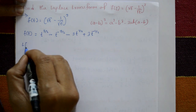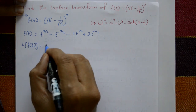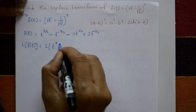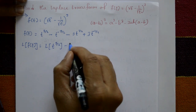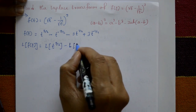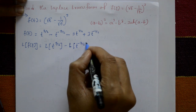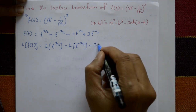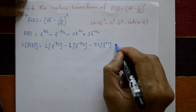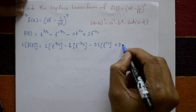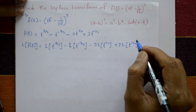Now applying the Laplace transform to both sides: L{f(t)} = L{t^(3/2)} - L{t^(-3/2)} - 3·L{t^(1/2)} + 3·L{t^(-1/2)}.